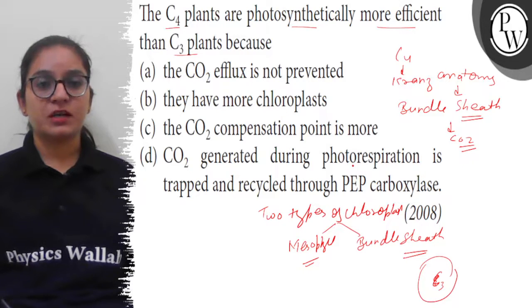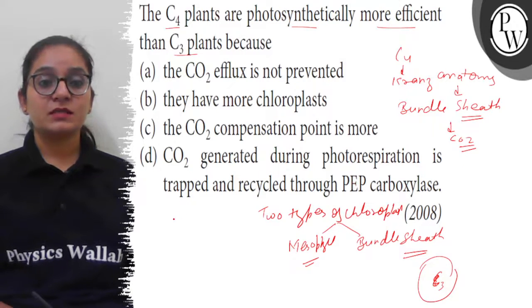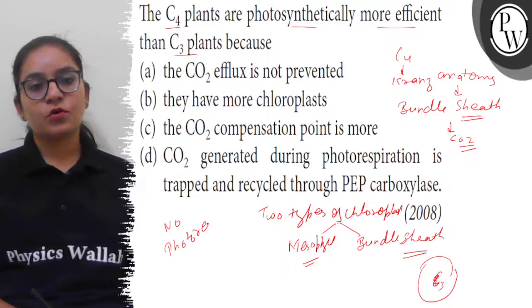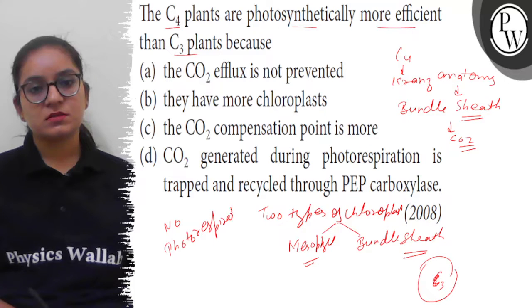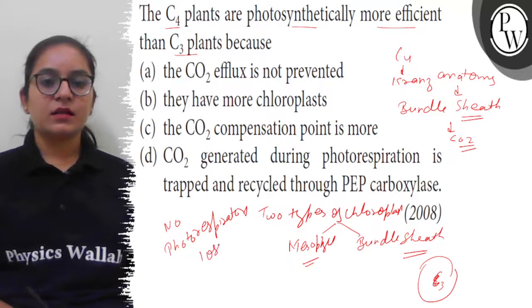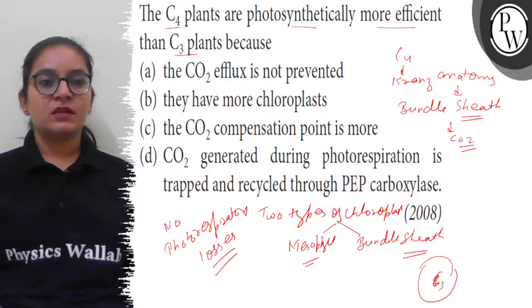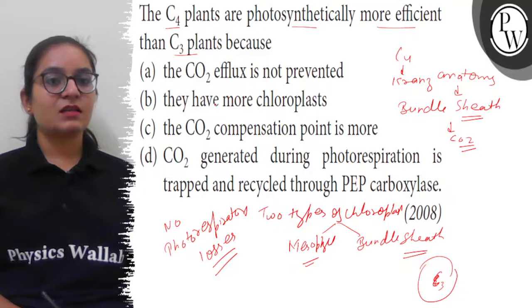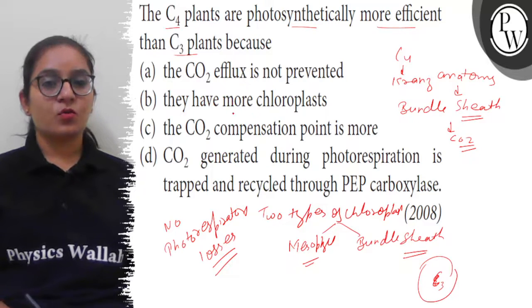Because bundle sheath cells have more chloroplasts, C4 plants are more efficient than C3 plants. Additionally, no photorespiratory losses occur in C4 plants, which is why they are more efficient.